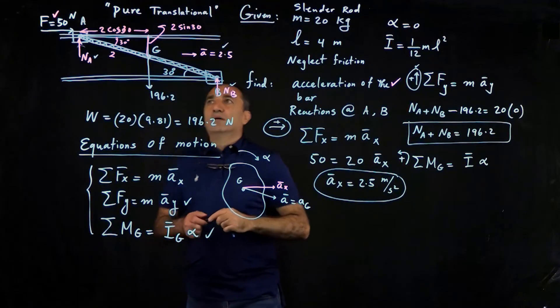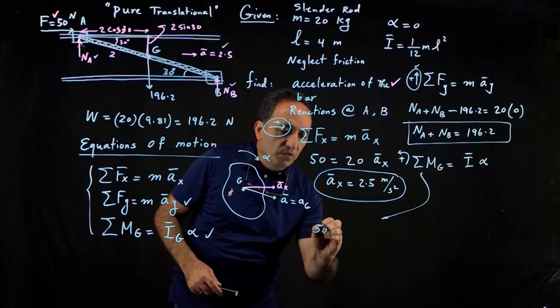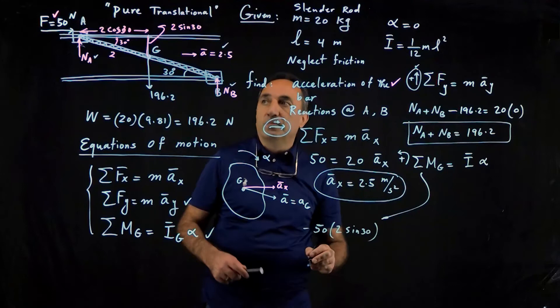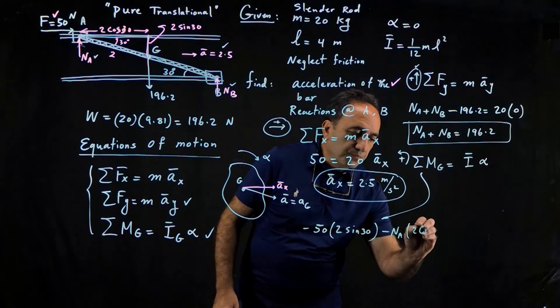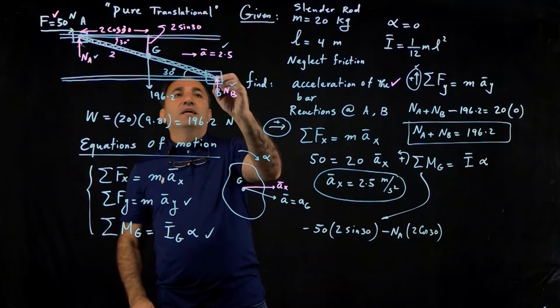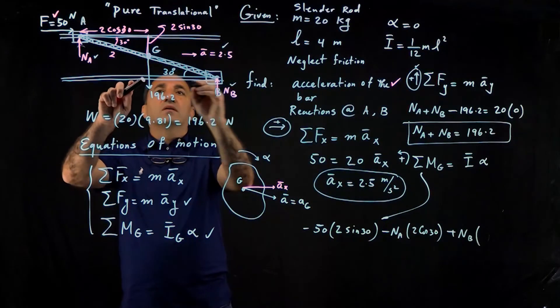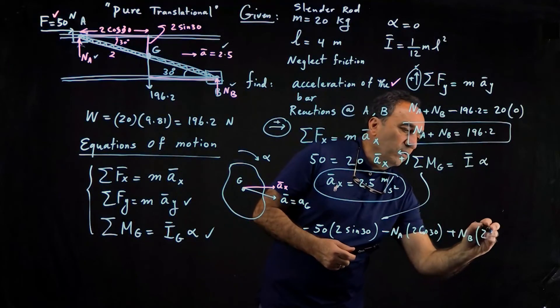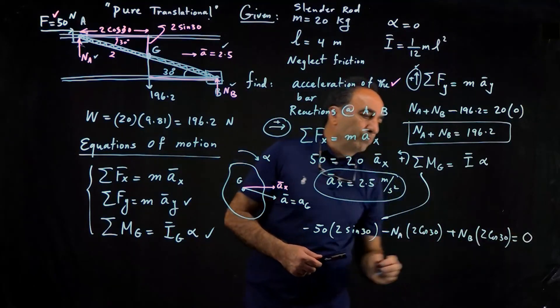So the moment of the 50 is going to be going clockwise about g. So that would be 50 times 2 sine 30, that's going negative. Na, it's also going to go clockwise, but you have to multiply it by 2 cosine 30. And then finally, weight is right through g, doesn't have any moment. And then that leaves us nb, which is going counterclockwise. And that's the same distance here as 2 cosine 30. So 2 cosine 30, but that's going positive. So 2 cosine 30 equals alpha is 0, pure translational motion. So that equals 0.